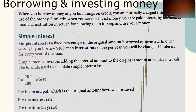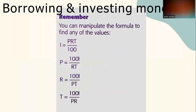For example, if you borrow $100 at an interest rate of 5% per year, you will be charged $5 interest for every year of the loan. Simple interest involves adding the interest amount to the original amount at regular intervals. The formula to calculate simple interest is: I = (P × R × T) / 100, where P is the principal (the original amount borrowed or saved), R is the interest rate, and T is the time in years. You have to remember this formula.